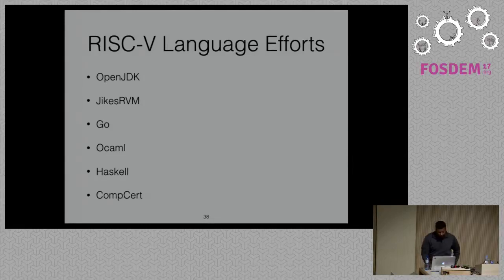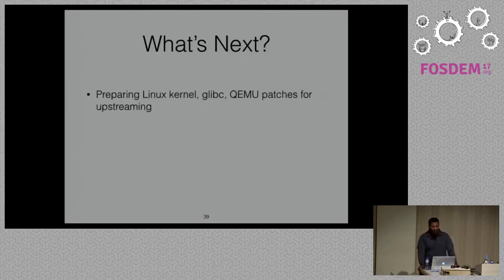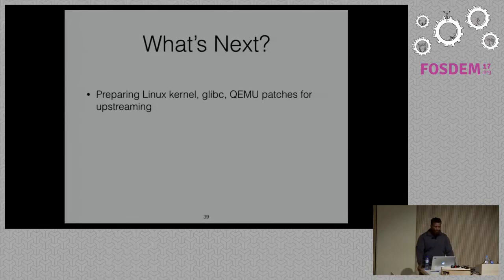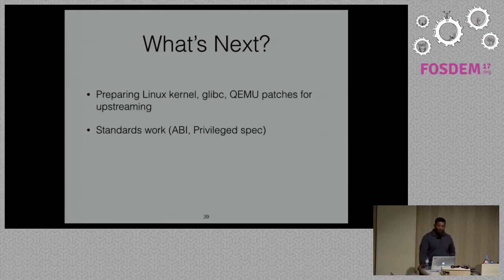There's a lot of action on the RISC-V software front. What's next? We're preparing Linux kernel, glibc, and QEMU patches for upstreaming. The lack of upstream Linux kernel support and glibc has been holding back some distros. The Linux kernel patches look reasonable — some maintainers have looked at them and there are a few issues to fix. Once they get fixed, hopefully those patches can go in. We also need to flesh out our ABI specification and finish work on the privileged specification, since it hasn't been ratified yet.